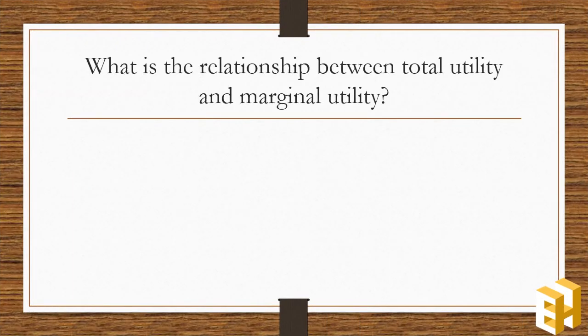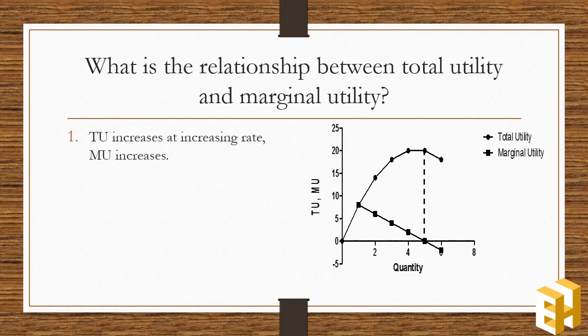After discussing the concept of total utility and marginal utility, it is important to know the relationship between them. When total utility increases at an increasing rate, marginal utility increases. When total utility increases at a decreasing rate, marginal utility then starts sloping downwards.